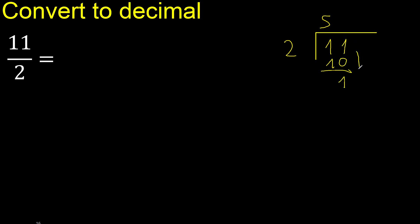There is no number that goes down, therefore complete. Always complete with 0. Here with a decimal point.